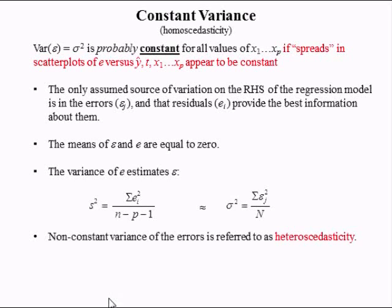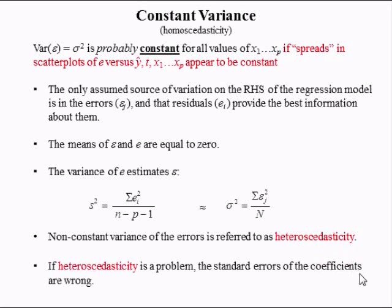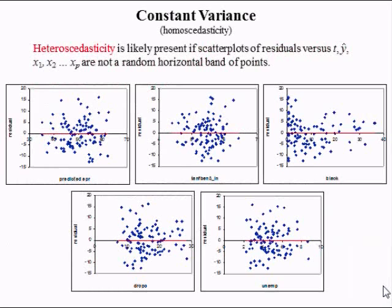Non-constant variance of the errors is referred to as heteroscedasticity — changing variance. If heteroscedasticity is a problem, the standard errors of the coefficients are wrong. Heteroscedasticity is likely present if the scatter plots of the residuals versus time, the predicted values of y, and the variables are not a random horizontal band of points. Here we have the residual versus y-hat, the predicted EPR.